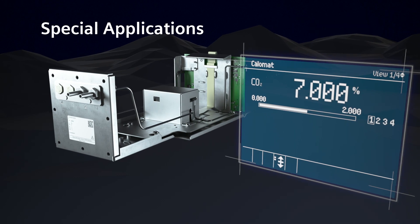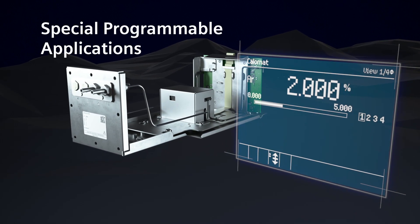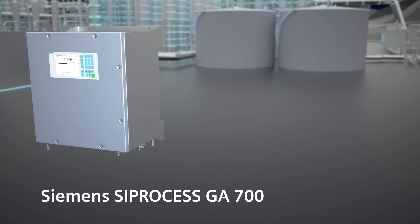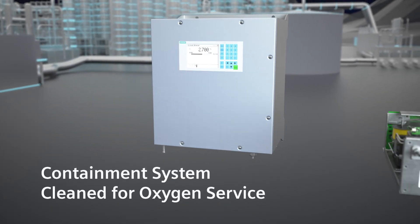In addition, specific individual solutions can be realized according to customer requirements to support special applications. The preset purging unit for the C-Process GA700 is an integral part of the new platform.